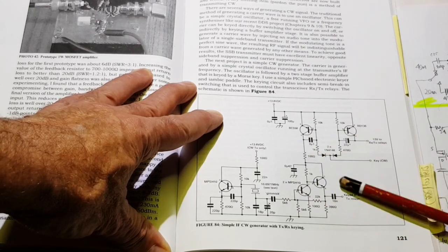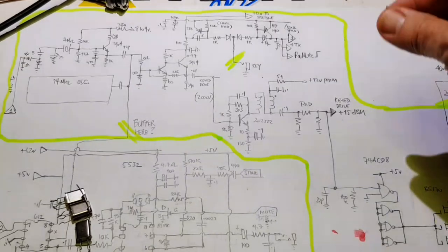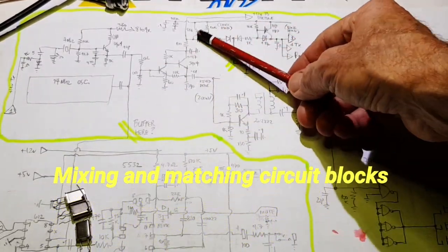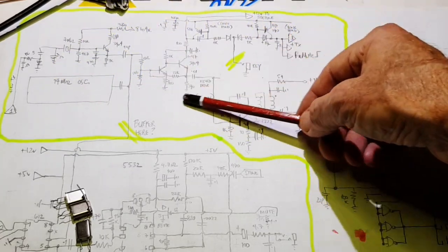So I've copied this circuit from EI9GQ and that's it here. The switching transistors and the keyed buffer.